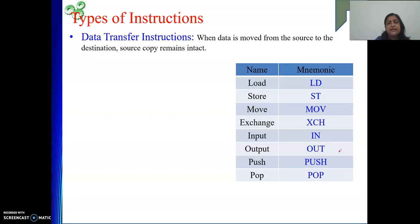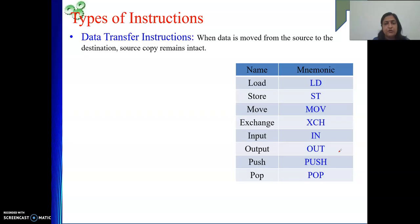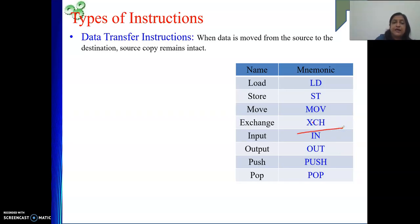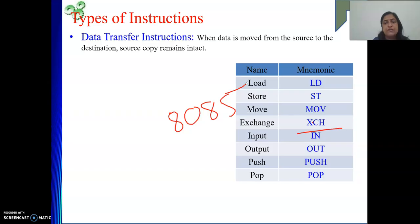Exchange means swapping — you are exchanging two values. Exchange is used to swap the values of two registers or two memory locations pointed to by designated registers. This instruction is mostly used by the 8085, where two designated registers point to two memory locations and their values are swapped.